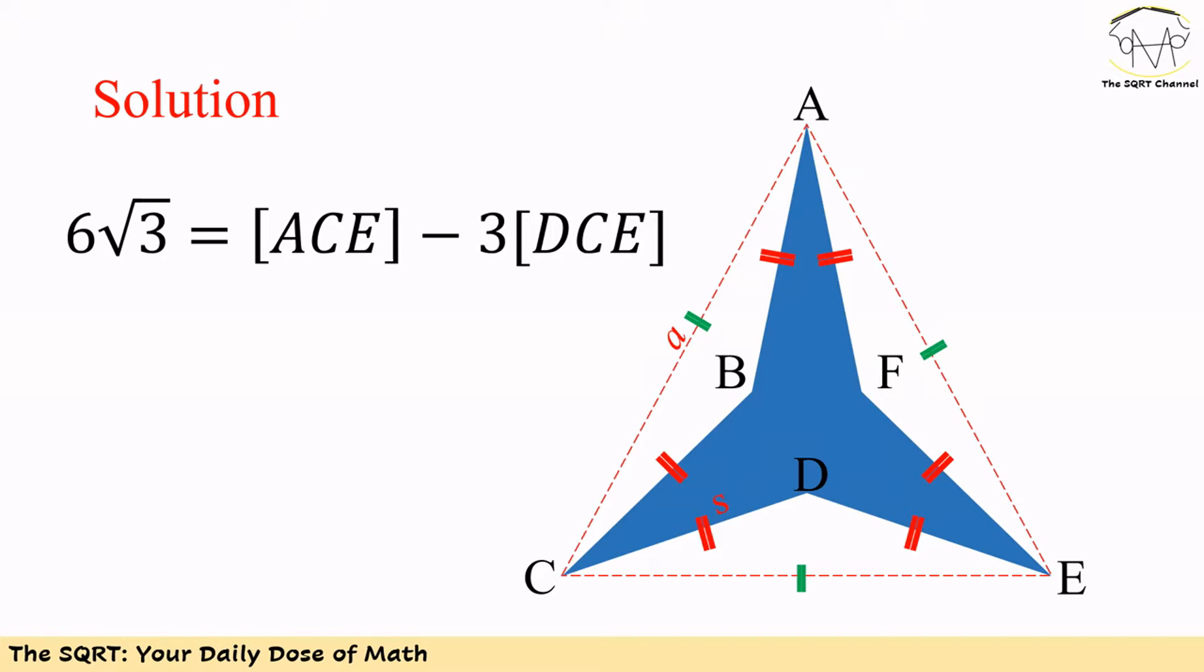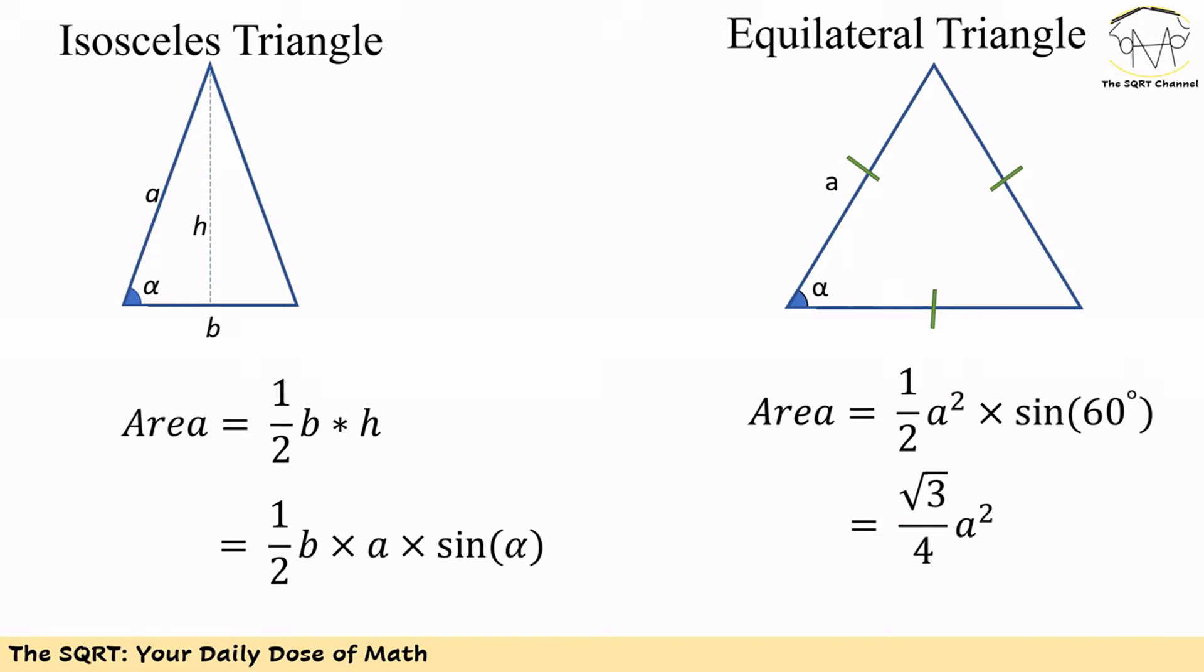We can write the area of the blue region as the area of triangle ACE minus three times the area of triangle DCE. Note that when the two sides of a triangle are equal, we can write the area of this triangle as base times one of the sides times sine of the angle between one of the sides and the base, divided by two.